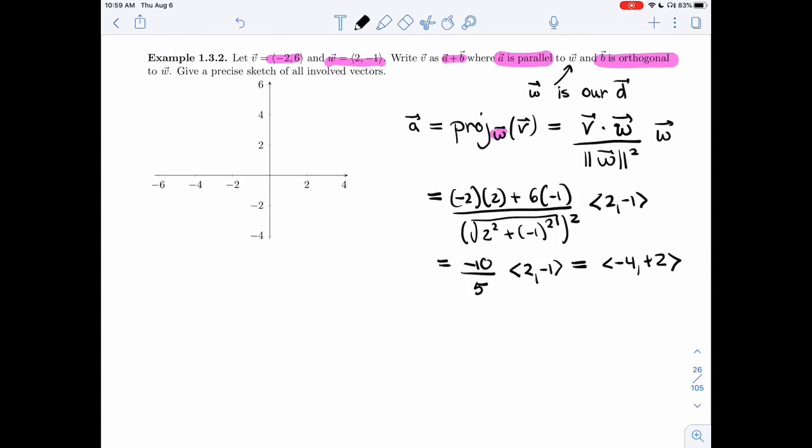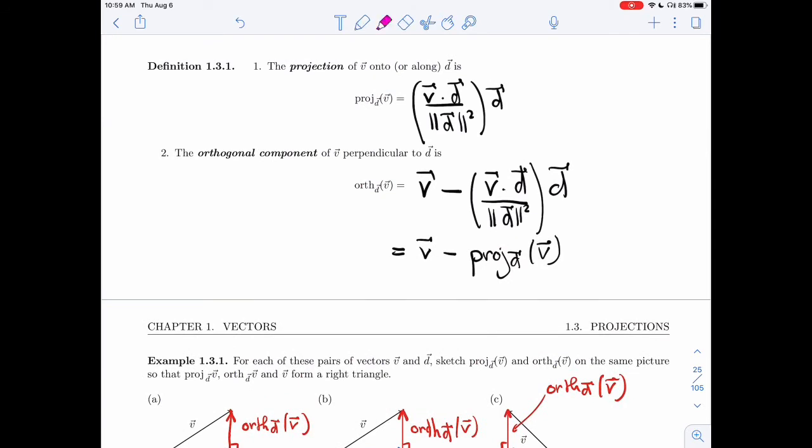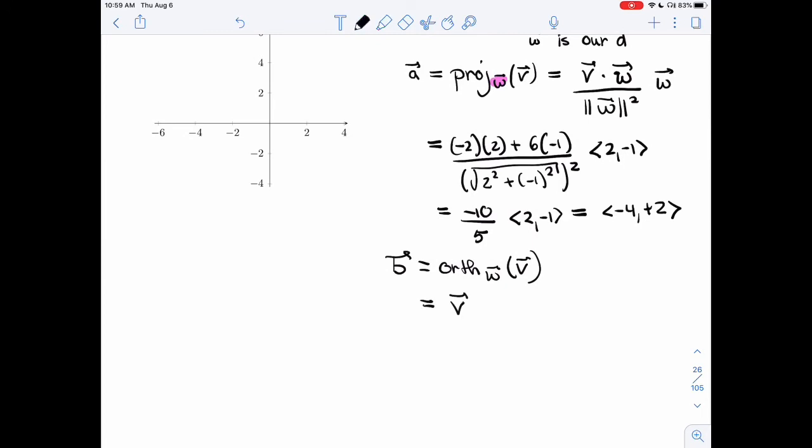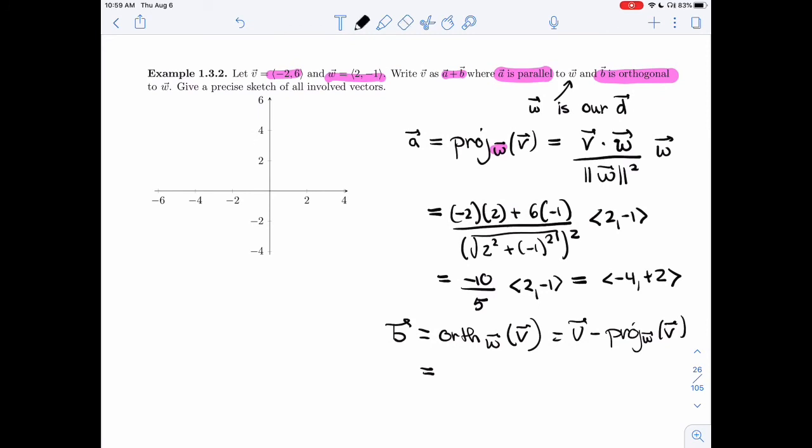Now let's find our B. B is the orthogonal component of V in the direction perpendicular to W. Here you could use the formula we've seen here, you could use this big formula. But since we've already computed the projection, I'm just going to take this second one and say it's V minus the projection. So B is V minus the projection. V was (-2, 6), the projection is (-4, 2), so I get (2, 4).